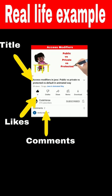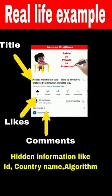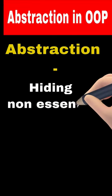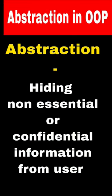And YouTube hides the confidential or irrelevant information, like what is the idea of the video, the country of origin of the video, and which complex algorithm YouTube has used to recommend this video to us. So, abstraction is a mechanism that allows us to hide irrelevant or confidential information from the user.